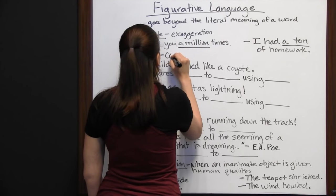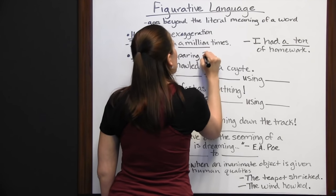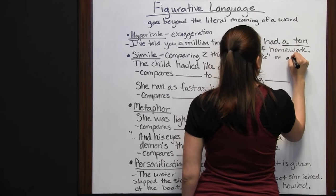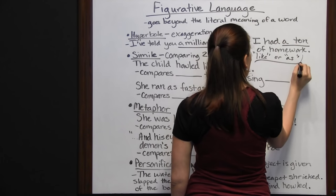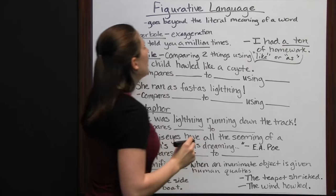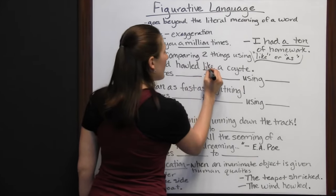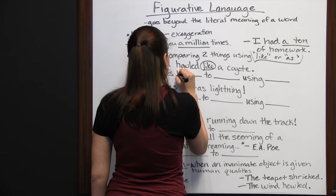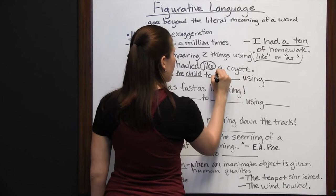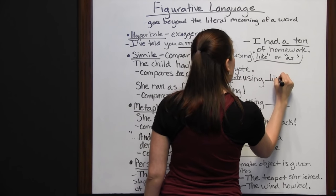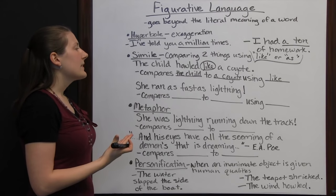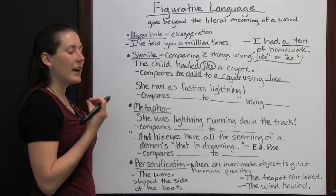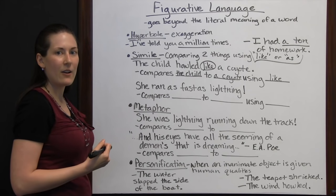A simile compares two things using 'like' or 'as' — it's very important to use those words, or it's not going to be a simile. For example: 'The child howled like a coyote.' We see the word 'like,' and we're comparing the child to a coyote. This figurative language lets you know the child is loud — its crying sounds like a howl, much like a coyote — helping you picture and hear in your mind how this child is screaming or crying.